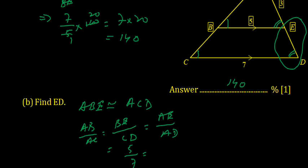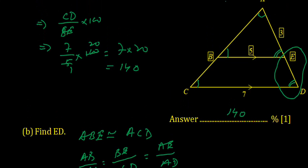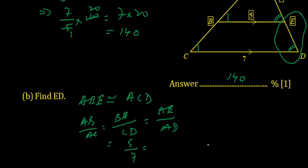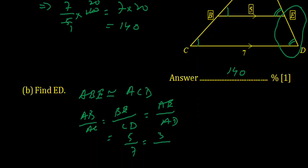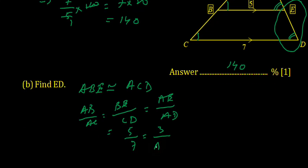AD equals AE plus ED. So 5 upon 7 equals 3 upon (AE plus AD). AE is 3, and we need to find AD.